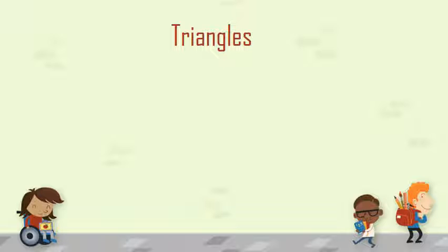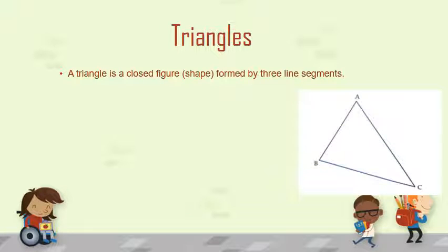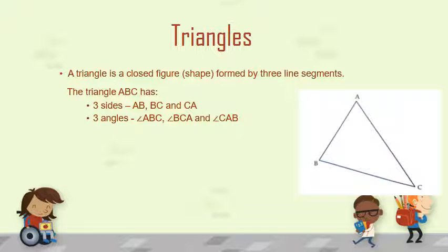Exercise 16C is about triangles, so let us revise what we have learned about triangles. A triangle is a closed figure or shape which is formed by three line segments. In the screen you can see the diagram of triangle ABC, made up of three line segments. So the triangle ABC has three sides: AB, BC, and CA. It has three angles: angle ABC, angle BCA, and angle CAB.